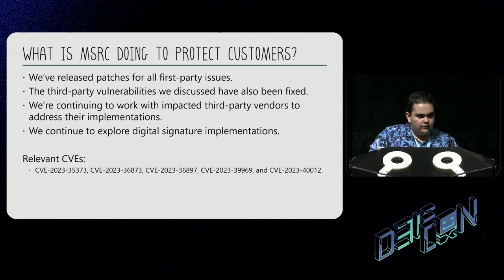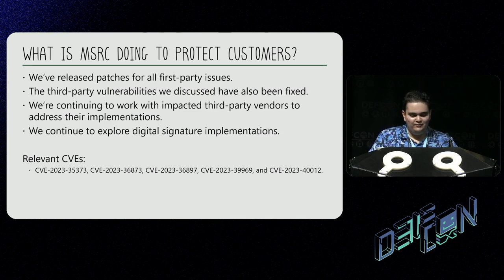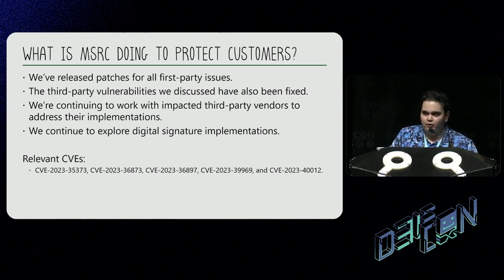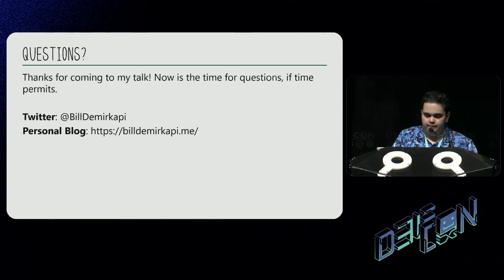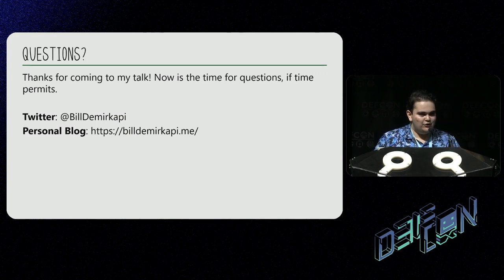What is Microsoft doing to protect customers? We've released patches for all first-party issues. The third-party vulnerabilities we discussed were also fixed. We're continuing to work with impacted third-party vendors to address their implementations, and we continue to explore issues in digital signature implementations. Below is a list of relevant CVEs that were issued as a result of this work. Thanks for coming to my talk — now is the time for questions, as time permits.